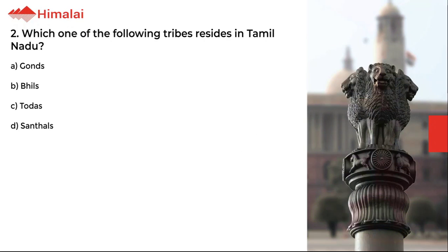Question number 2. Which one of the following tribes resides in Tamil Nadu? A. Gonds, B. Bhils, C. Todas, D. Santals. The correct option is C.